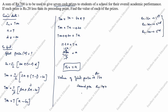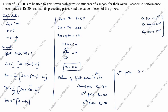So the first prize is rupees 160. Each subsequent prize is rupees 20 less than the preceding one. The third prize is rupees 120, the fourth prize is rupees 100, the fifth prize is rupees 80, the sixth prize is rupees 60, and the seventh prize is rupees 40.